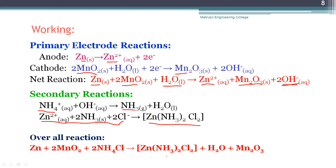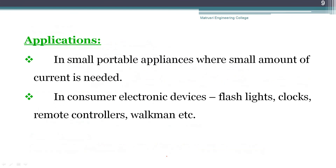The primary electrode reactions produce electricity, while the secondary reactions do not contribute to the voltage and cannot be reversed by passing electricity. This makes the battery a primary battery. Applications of the dry cell include small portable appliances that require a small amount of current, such as flashlights, clocks, watches, and remote controllers.